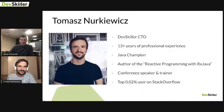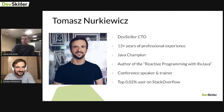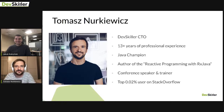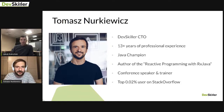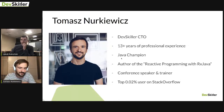I'm Tomasz Nurkiewicz, CTO at DevSkiller — so Jakub is my boss. In 1989 I was actually four years old, so I wasn't coding, but I did catch up. I'm a Java Champion, I wrote a book about RxJava, I used to be a frequent speaker at conferences and a trainer, and I've hit 300K reputation on Stack Overflow. That's our background — let's go straight to the meaty content.